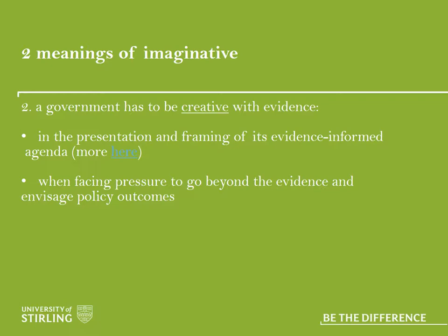They have to be imaginative in two ways. First is in the presentation of evidence — they have to understand evidence in a particular way and frame the consequences to people in a particular way. The idea is there's no objective way to produce and understand evidence; this is about being creative to get people to understand it in a particular way. The second way is that there's never enough evidence to completely reduce uncertainty, so they have to go beyond the evidence, think about the future, and envisage the outcomes of their choices. Evidence tells you what happened in the past, but it doesn't tell you what will happen when you make choices for the future.